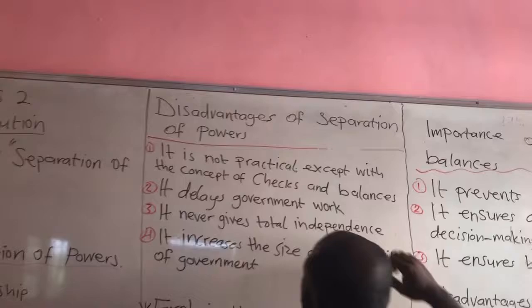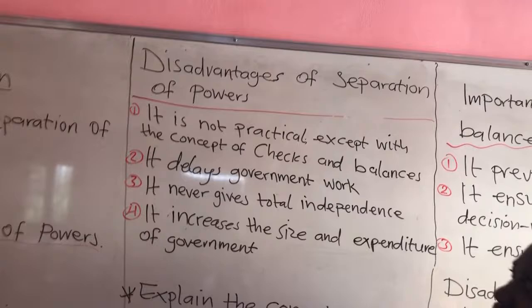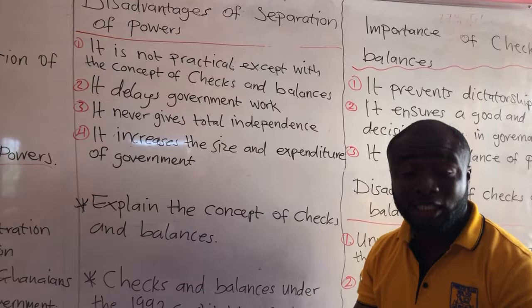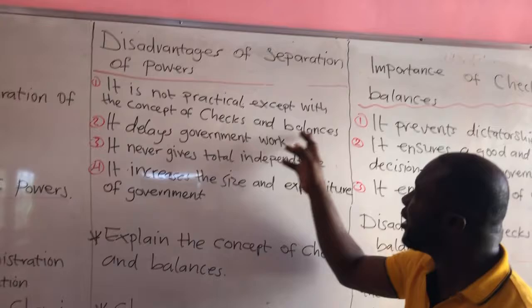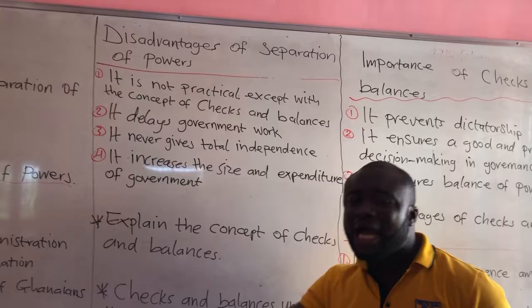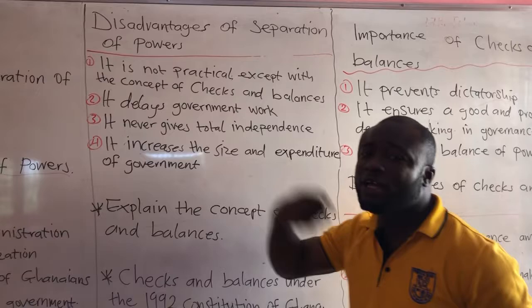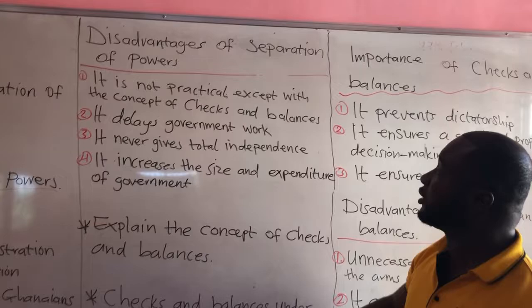Now we move to the disadvantages of separation of powers. First, it is not practical except with the concept of checks and balances — it is just theoretical, just on paper, and in practice it doesn't work unless it comes with checks and balances. Checks and balances is when one arm of government is allowed to check the other arm of government so that it doesn't abuse its powers. Separation of powers can only become practical when combined with checks and balances.